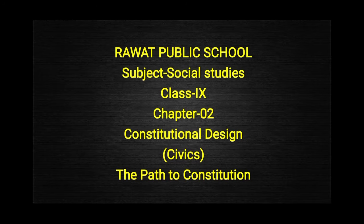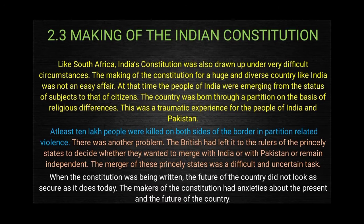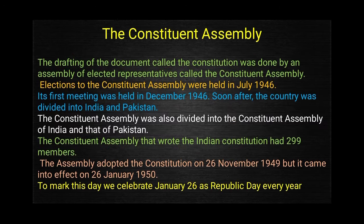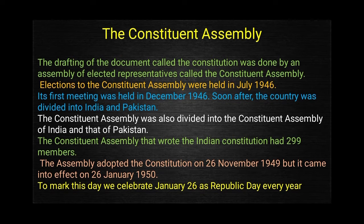Good morning class 9th. In the previous class we have done making of the Indian Constitution, the path to Constitution, and the introductory part of the Constituent Assembly. We have seen that there are elections in the Constituent Assembly. The first elections of the Constituent Assembly were held in July 1946 and the first meeting held on 9th December 1946.